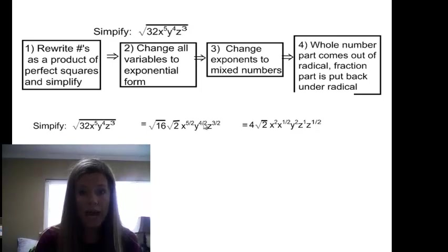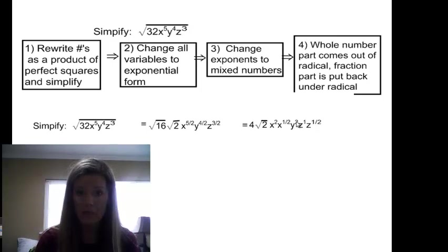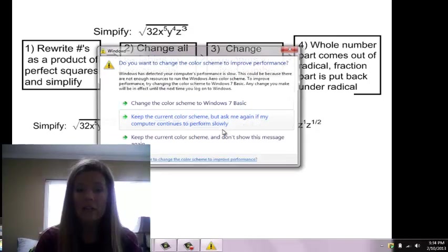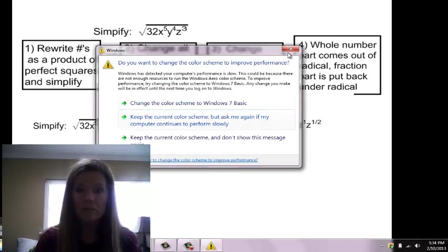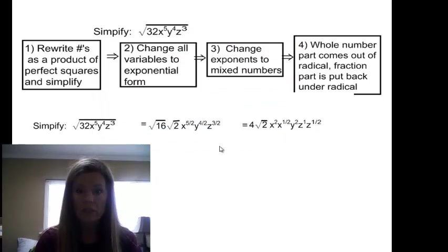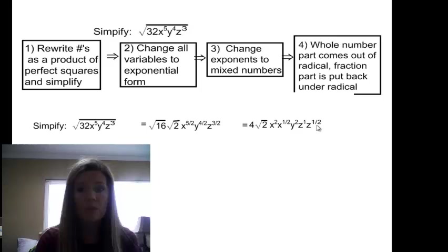Y to the 4 halves — 4 halves reduces to just y squared, so there is no fractional part with that one. And z to the 3 halves: 2 goes into 3 once, giving me z to the 1, with a remainder of 1 half, giving me z to the 1 half.